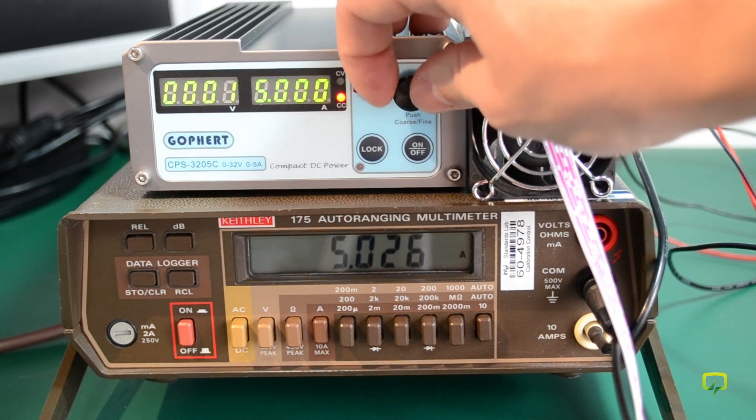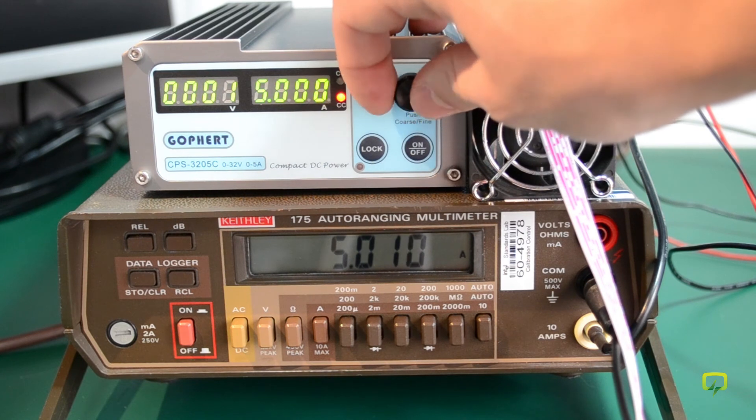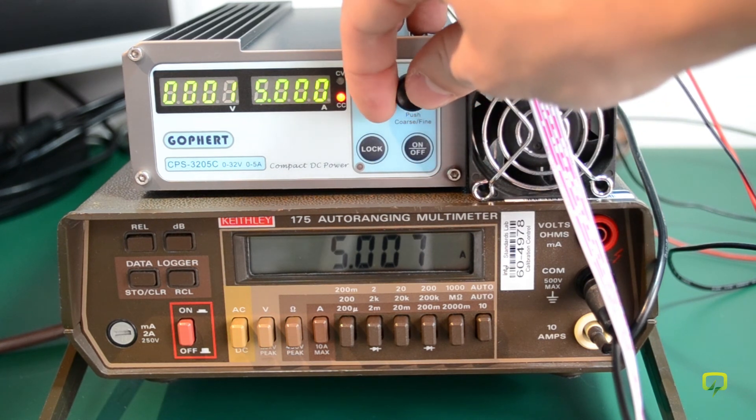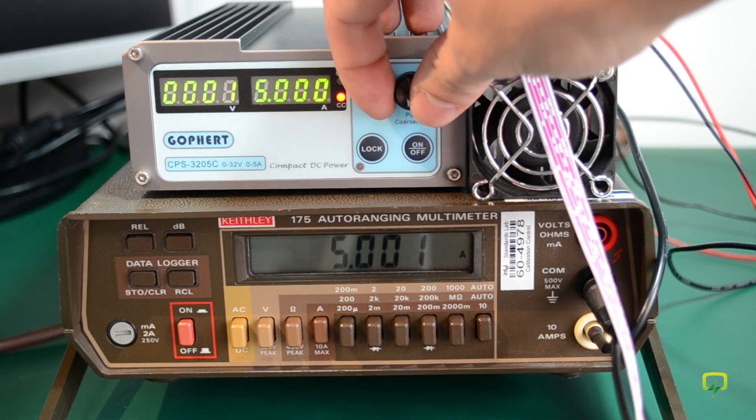I think one of the problems of this calibration is that it only has these two ranges for calibrating the ammeter: the 1 amp and the 5 amp. It should have been better if it also had a 500mA calibration range.